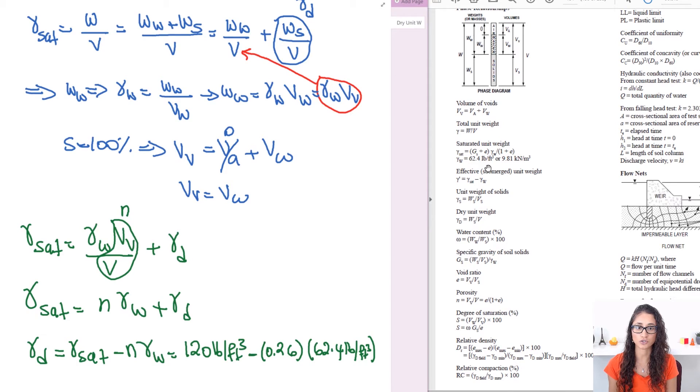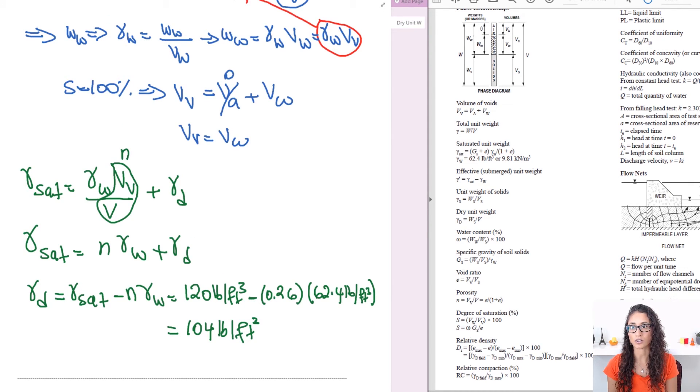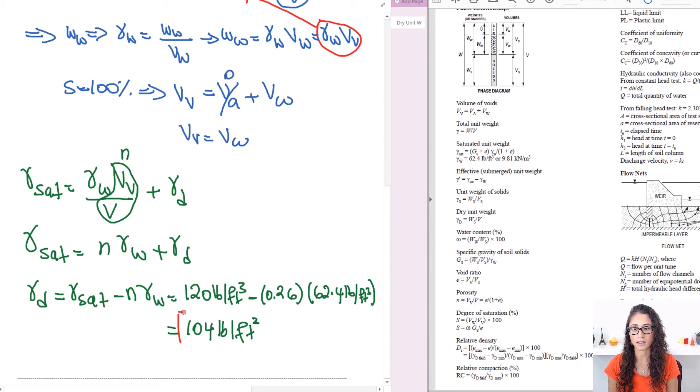However just make sure you use the right one. If you're dealing with SI units use 9.81 and here we're using pounds per cubic feet and that's why we have to use 62.4. So if you plug this in your calculator you should get an answer of 104 pounds per cubic feet. So that is your answer and I believe that's answer A.